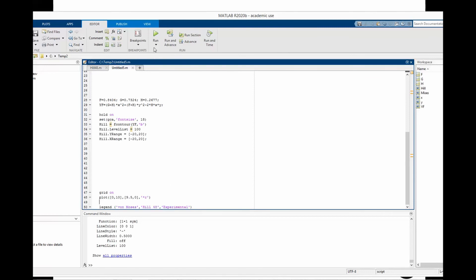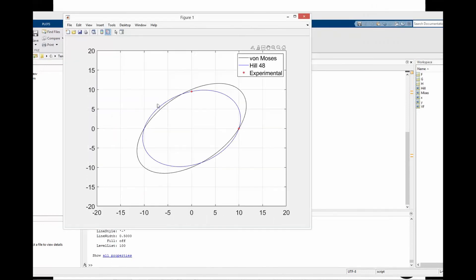So let's run this code. This is what we get finally. It shows how Hill48 yield function nicely crosses the experimental data point both at zero degree and 90 degree tensile test.